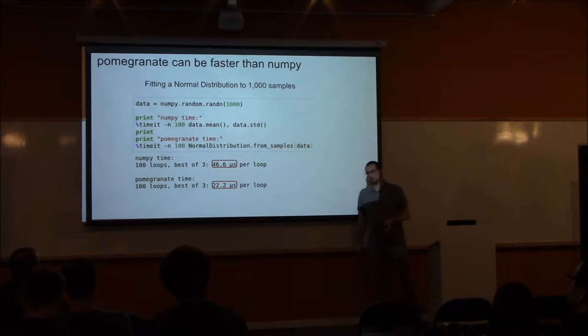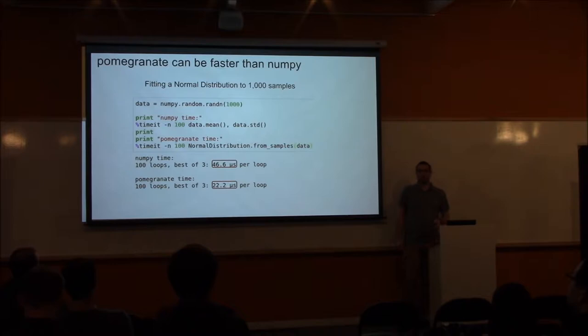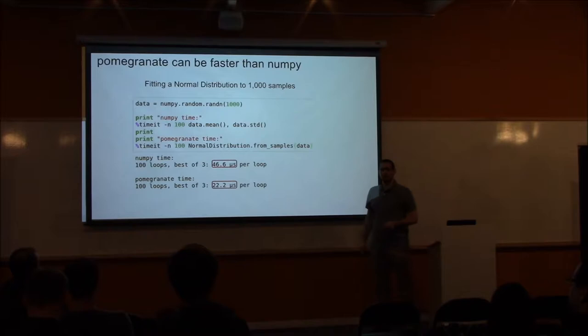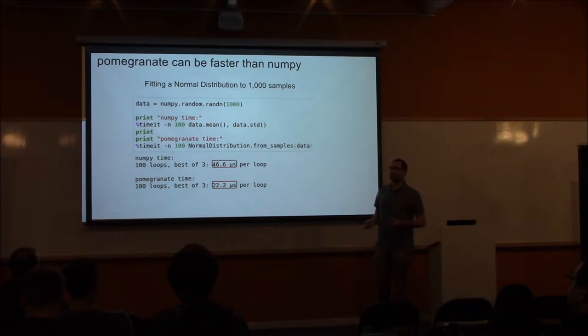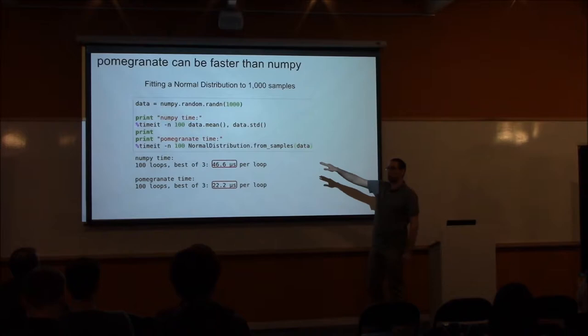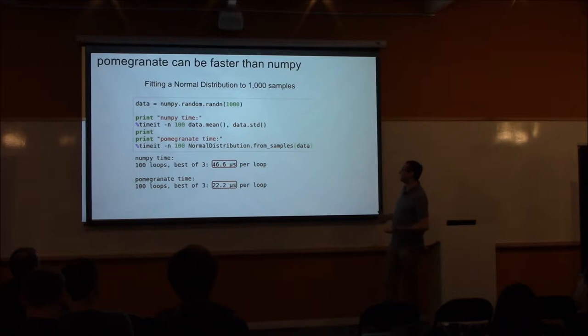I said that pomegranate is fast and faster than other packages. Let's compare it to NumPy. If you want to fit a normal distribution, pomegranate is far faster. If you generate around a thousand samples from a single dimension, it takes 22 microseconds for pomegranate, whereas it takes 46 microseconds for NumPy. The main reason is that in NumPy you have to calculate the mean and then the standard deviation — two passes through the data — and when you calculate the standard deviation you have to recalculate the mean. With pomegranate, we know we're fitting a normal distribution, so we don't redo calculations we know we'll need to do later.